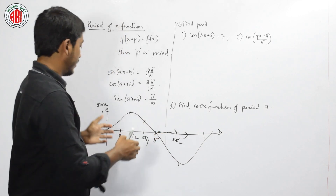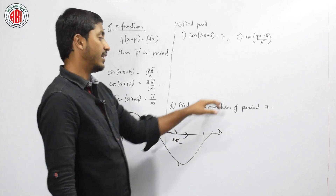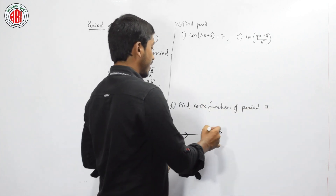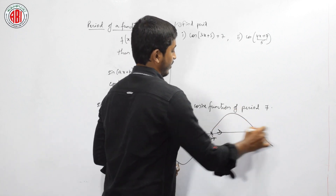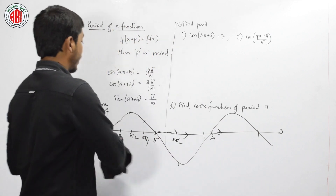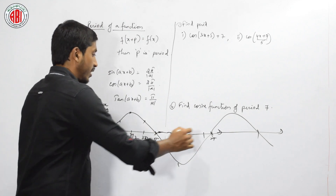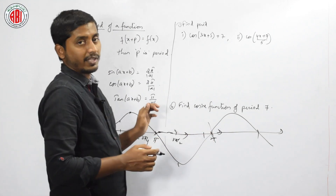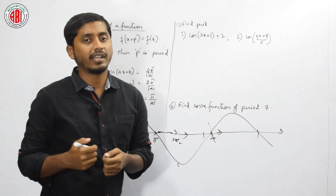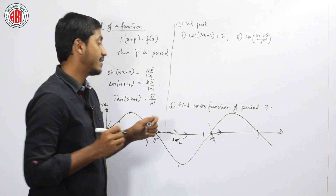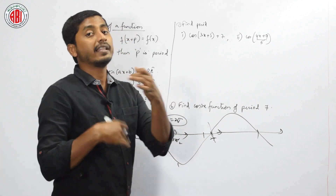Is it repeating in the same way? This pattern is the same here and again here. After this, it will start repeating — from 2pi it will again come into the first quadrant. After how much is it repeating? From this point to this point is the first cycle, and then it repeats. That is, after x equals 2pi, it repeats the same thing.